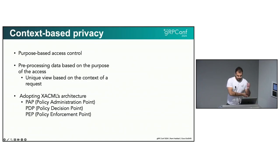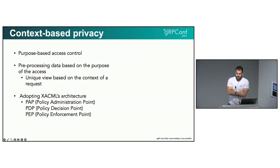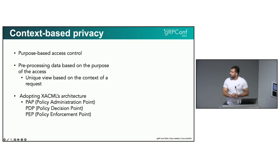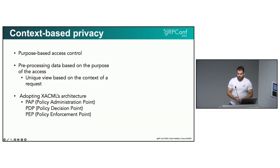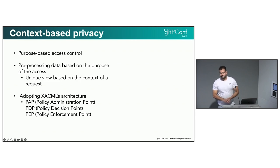We would like to introduce a security layer known as privacy security. The goal is purpose-based access control, which is very synonymous with context-based privacy. We looked at this through the extended access control markup language — XACML — architecture, which consists of three components: the Policy Administration Point, Policy Enforcement Point, and Policy Decision Point. We looked at implementing these three areas in gRPC as well, using an interceptor — gRPC middleware — in a very simple implementation.